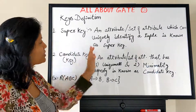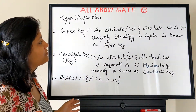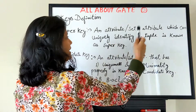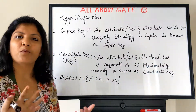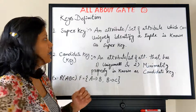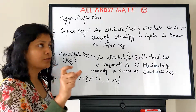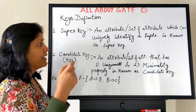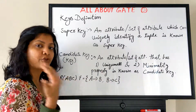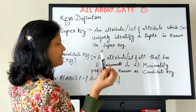The very first key is the super key. An attribute or a set of attributes which can uniquely identify a tuple is known as a super key. Uniquely identifying a tuple means: if I give you the value of that attribute, you can find out and retrieve the entire tuple where that particular attribute and its value is present.